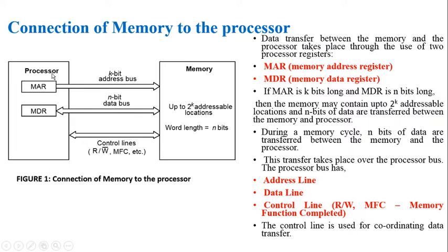MAR and MDR are used to support data transfer between the processor and memory for both read and write operations. If MAR is k bits long and MDR is n bits long, then the memory may contain up to 2^k addressable locations, and n bits of data are transferred between the memory and processor during each memory cycle.